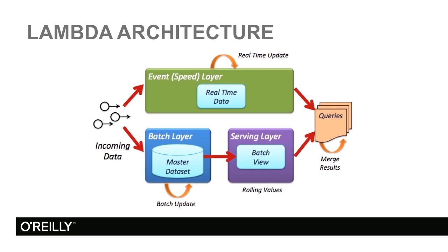we are going to create a view. We call this a batch view, and we are going to place it into the serving layer. What we do in this area is create some rolling values that we will then combine with what we see as the real-time update.